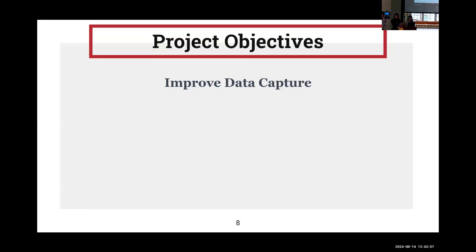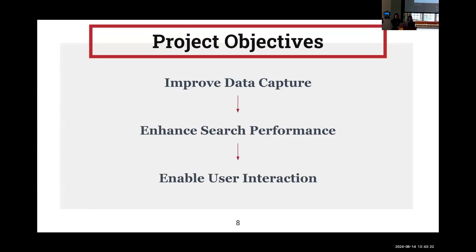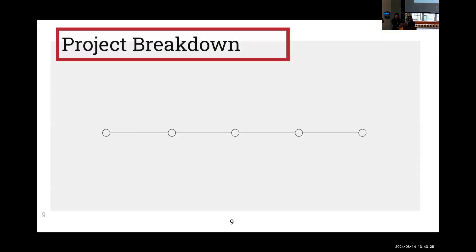The broad objectives of our project entail improving data capture, which essentially means extracting more meaning out of the text, then enhanced search performance, which is essentially for improving information retrieval, and then finally enabling user interaction. Here is an overview of our timeline for the project.